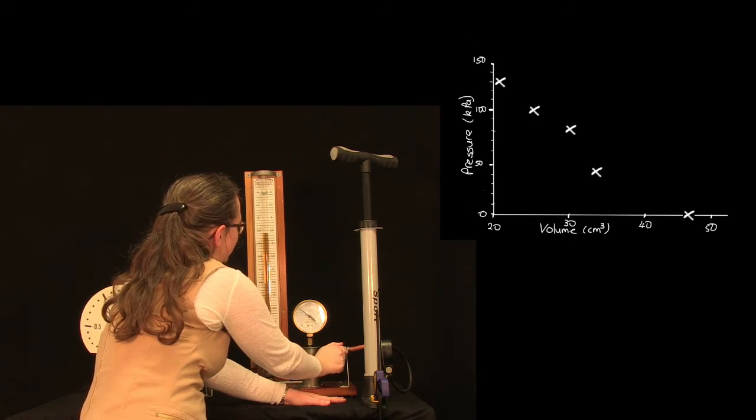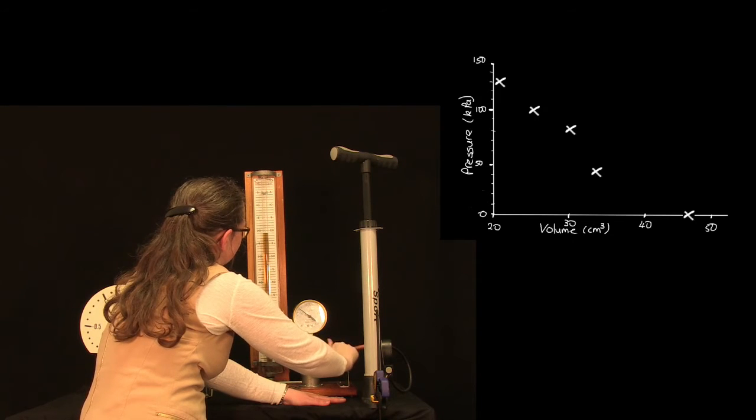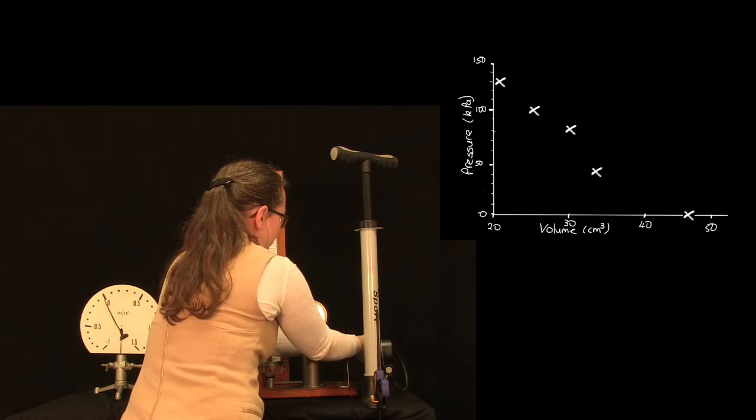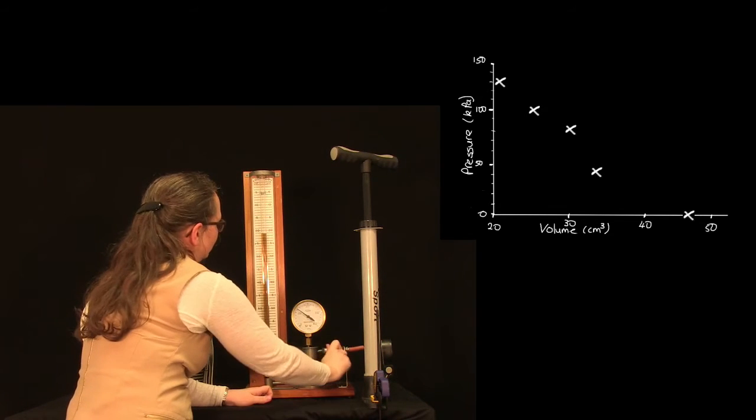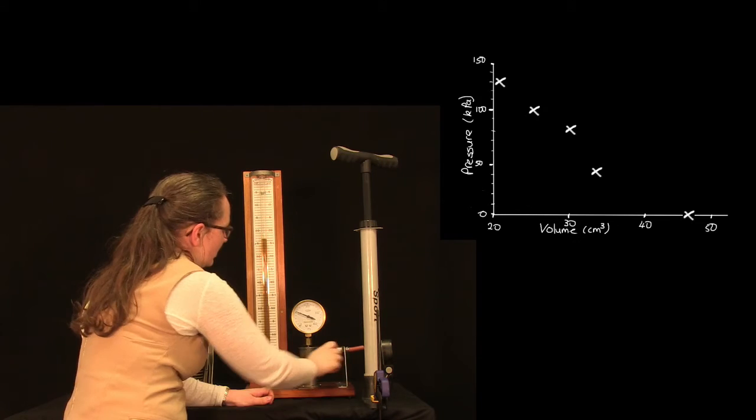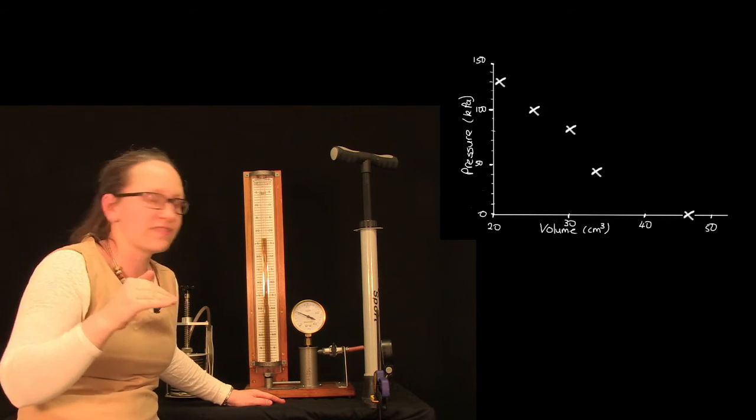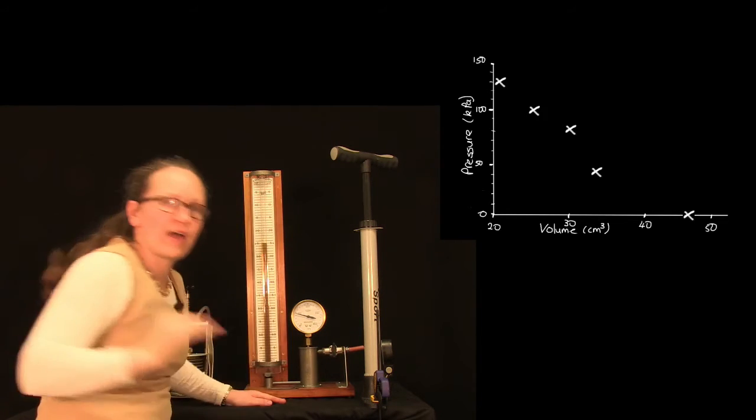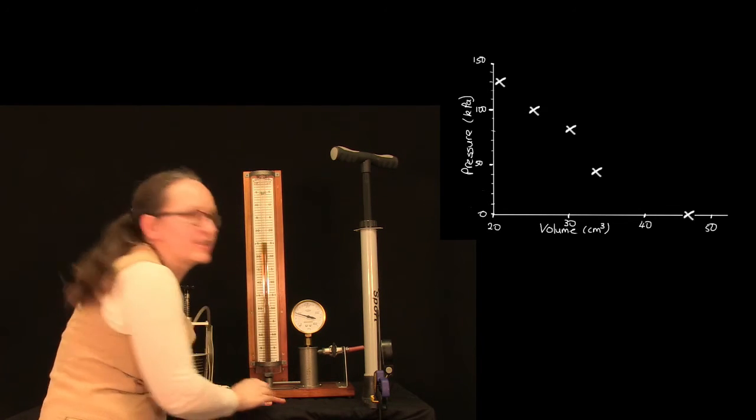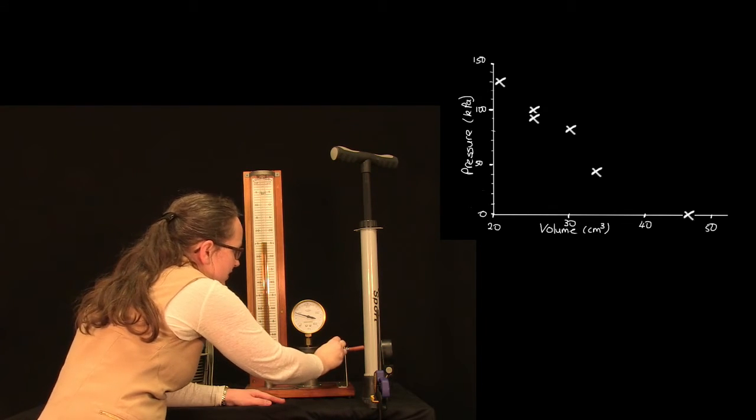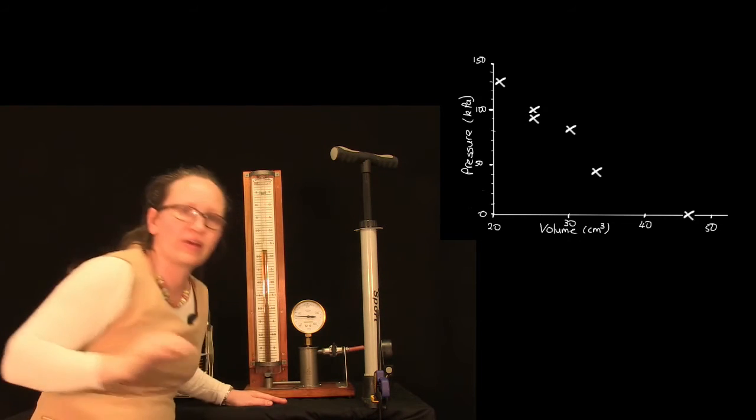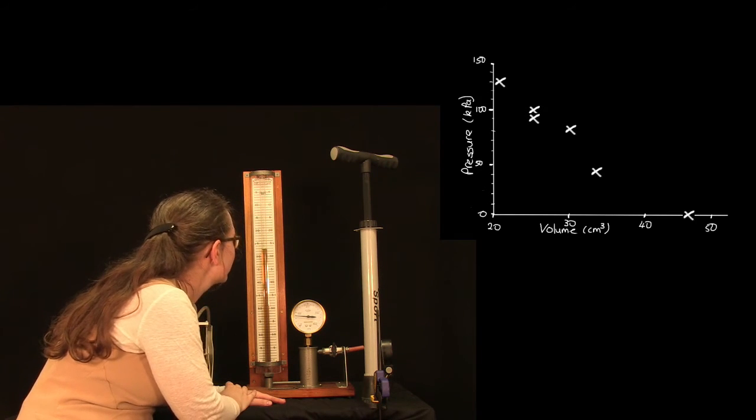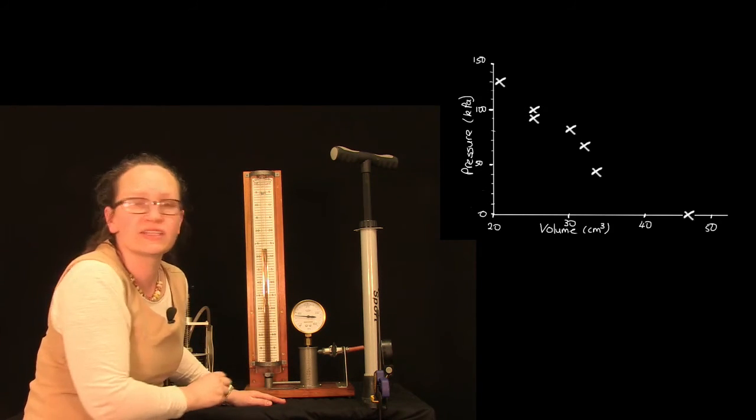Let's slowly decrease the pressure. So we can get some more results for our graph on the way back down. We're now at 90 kilopascals, and the volume of air is 25 centimeters cubed. We're at 70 kilopascals, and the volume of air is around about 33 centimeters cubed.